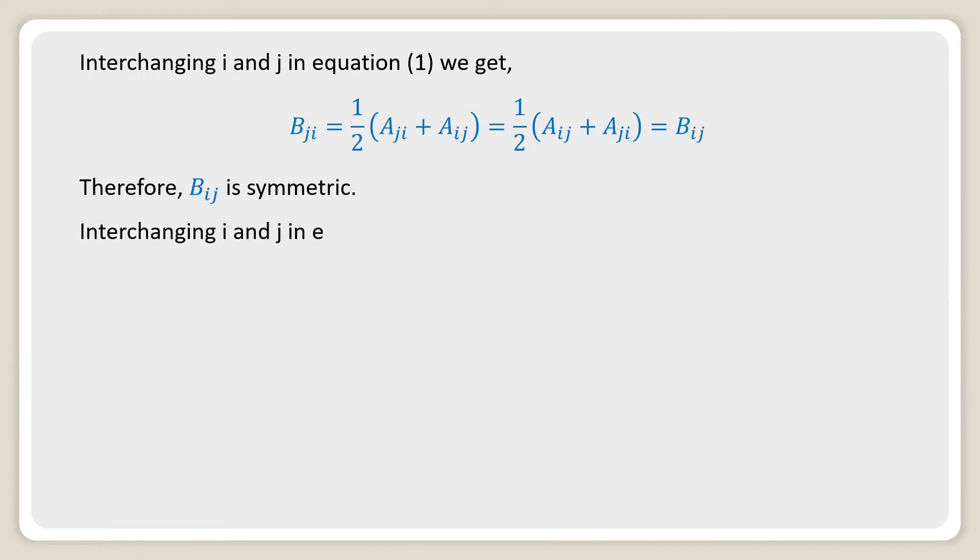Interchanging i and j in equation 2, we get Cji = (1/2)(Aji - Aij) = -(1/2)(Aij - Aji) = -Cij. Therefore Cij is anti-symmetric.